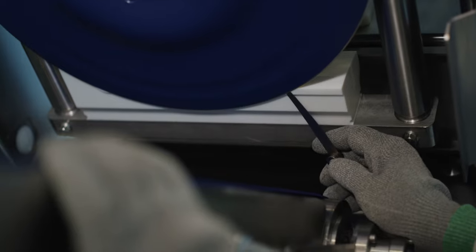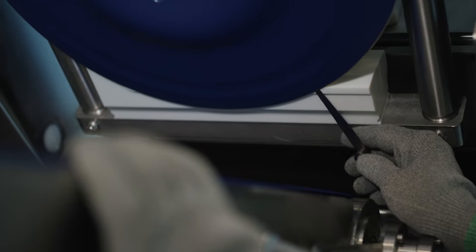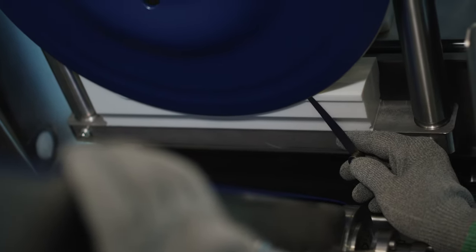Use a feeler gauge to measure the gap between the blade and the shear edge. The measurement should be between 0.5 millimeters and 1 millimeter.